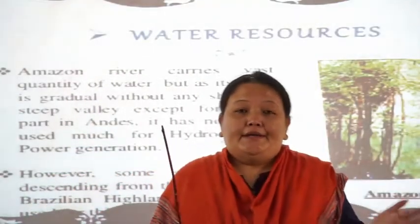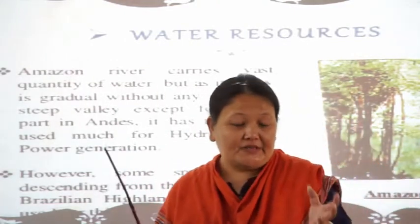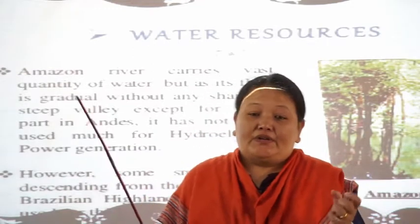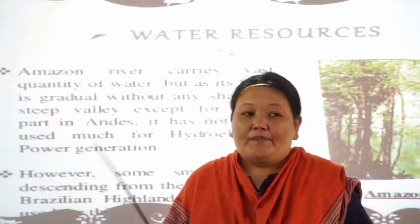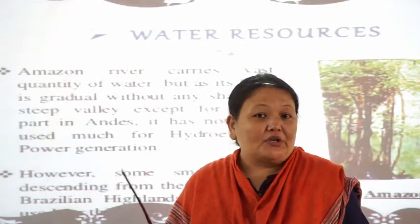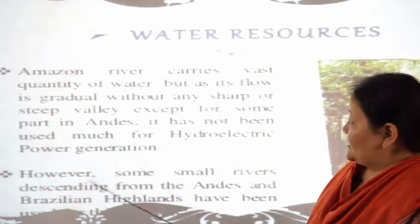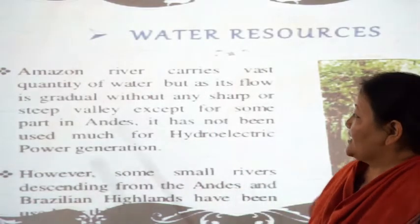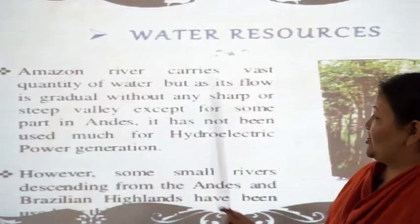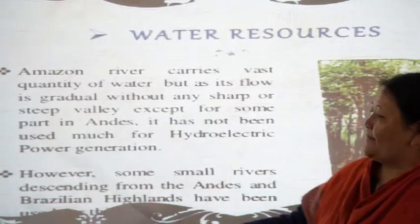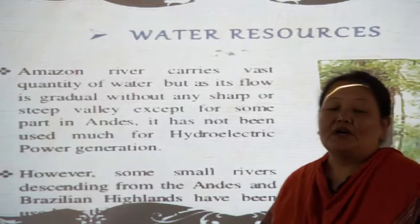In South America you have the famous river Amazon. River Amazon passes through very dense forest, because of which much water of the river Amazon cannot be used for any purpose. The Amazon river carries a vast quantity of water, but as its flow is gradual without any sharp or steep valley, except for some parts in the Andes, it has not been much used for electric power generation.